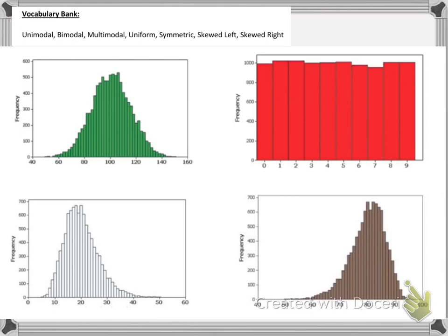So in order to really make sure that you understand these concepts, I would encourage you to pause this video and go through this vocabulary and use the words unimodal, bimodal, multimodal, uniform, symmetric, skewed left, and skewed right to describe these four graphs. Now, each graph should probably have at least two of these words that's applied to it. And also note that some of these words won't be used at all, and others will be used more than once. So take a minute, pause the video, and write this down.